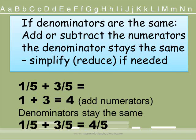Now I have to determine if I have to reduce that answer. I ask myself, is there a number that will go into both the numerator and the denominator evenly? There is no number that goes into both 4 and 5 evenly except 1, and 1 will give us the same fraction. So we are fully reduced.